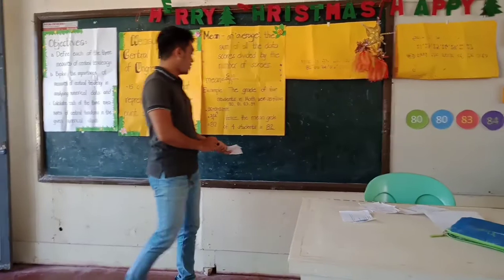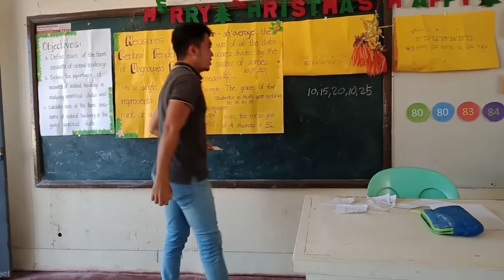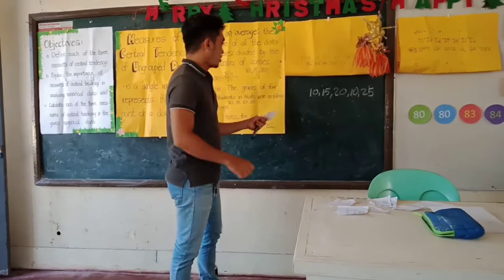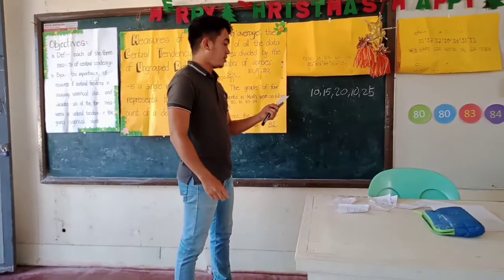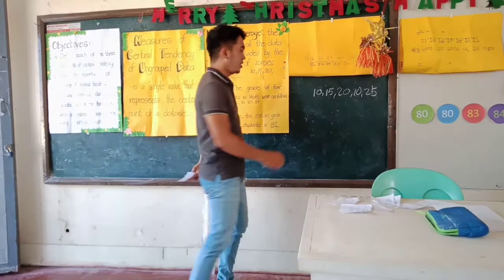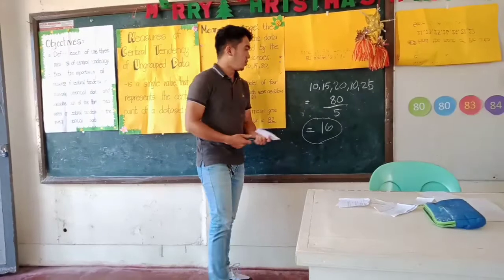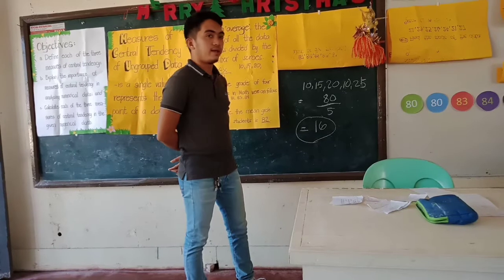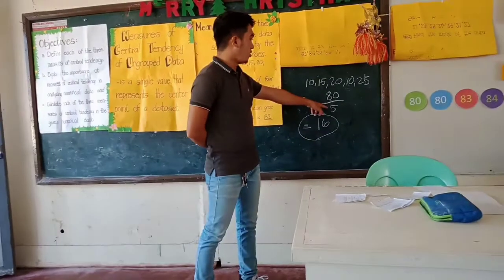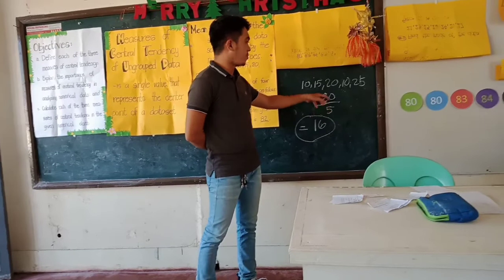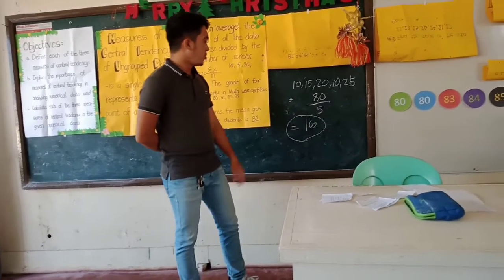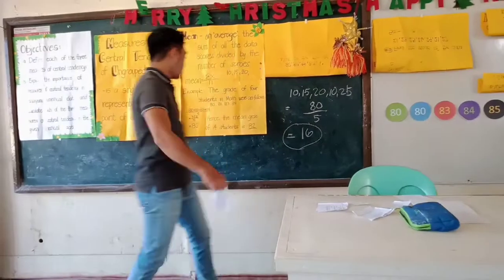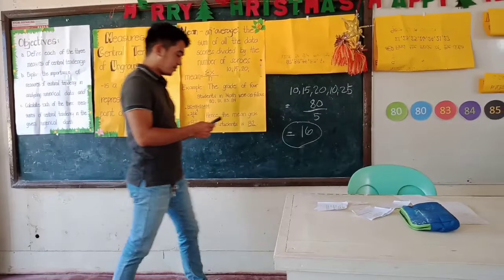Do you understand the lesson, class? Yes, sir. How about I give you another example? These are the five scores of the five basketball players. Can you find the mean for this data, Mr. Reggie? Okay, very good. You add those five scores of the basketball players and then divide by how many players, which is five. So the mean score of the basketball team is 16. Very good. Do you have any questions, class? No, sir.